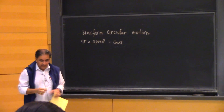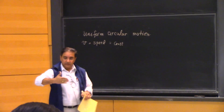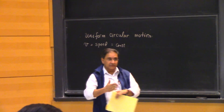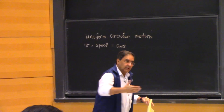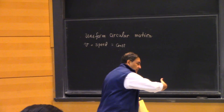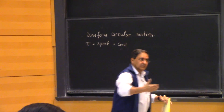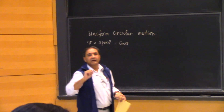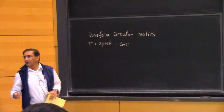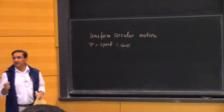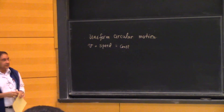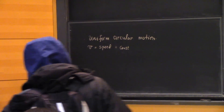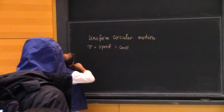We also discussed that velocity, which has a magnitude and a direction, is continuously changing as you go around in a circle. We already know that if velocity is changing, there must be an acceleration.